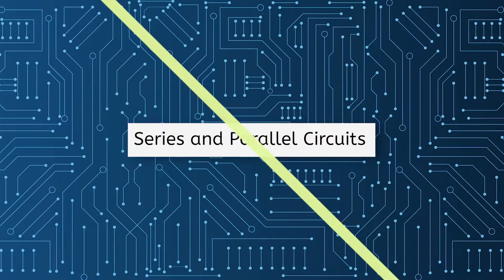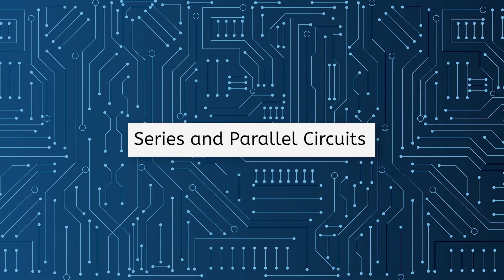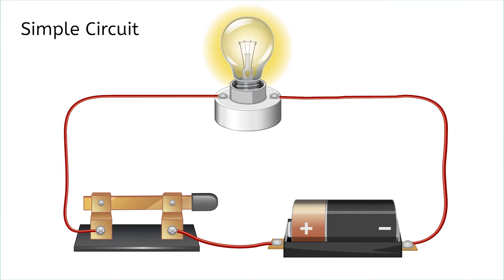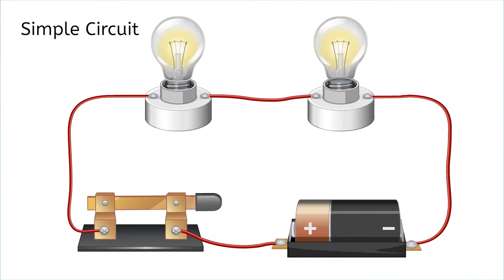The simple circuit we built before had only one light bulb. But what if we need more than one bulb? Can we add it to the same circuit? Let's try. If I add a second bulb next to the first, I have created what is known as a series circuit because I have two bulbs in a series.